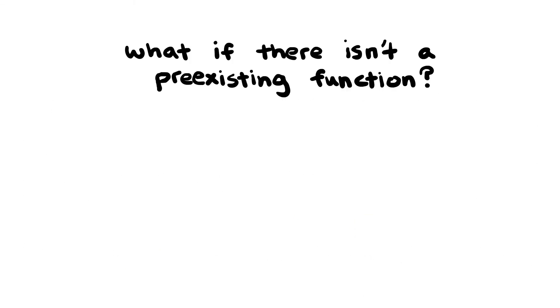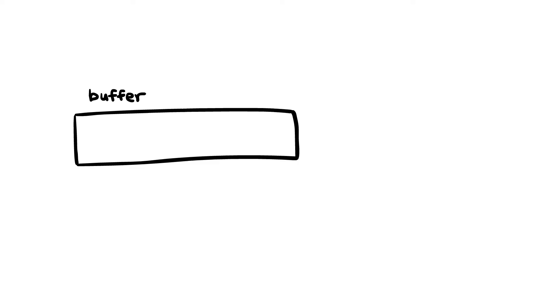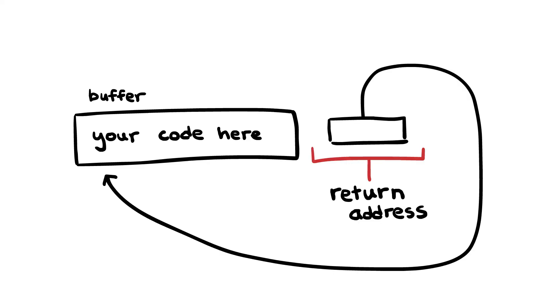Okay, that's cool and all. But what if there isn't a pre-existing function that we want to return to like dispense money in our previous example? People eventually figured out that you could write your own code in the buffer during a buffer overflow, and then overwrite the return address to jump back to execute the code you just wrote. This code could be reading a file, dumping passwords, starting a shell, anything. They were no longer limited to using code that was already present in the program.